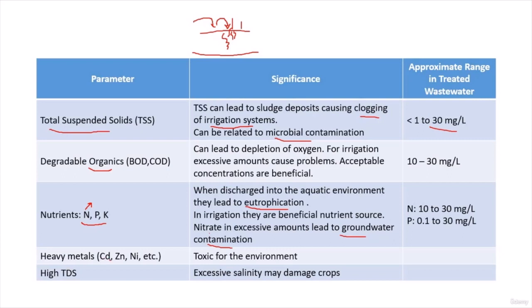We also have the problem of heavy metals like cadmium, zinc, and nickel — these are toxic to the environment. Also, if our water has high TDS (high salinity level), you might consider dropping the idea of irrigation, because to lower the TDS we have to use a reverse osmosis system, which is very expensive and requires high maintenance and high energy consumption.